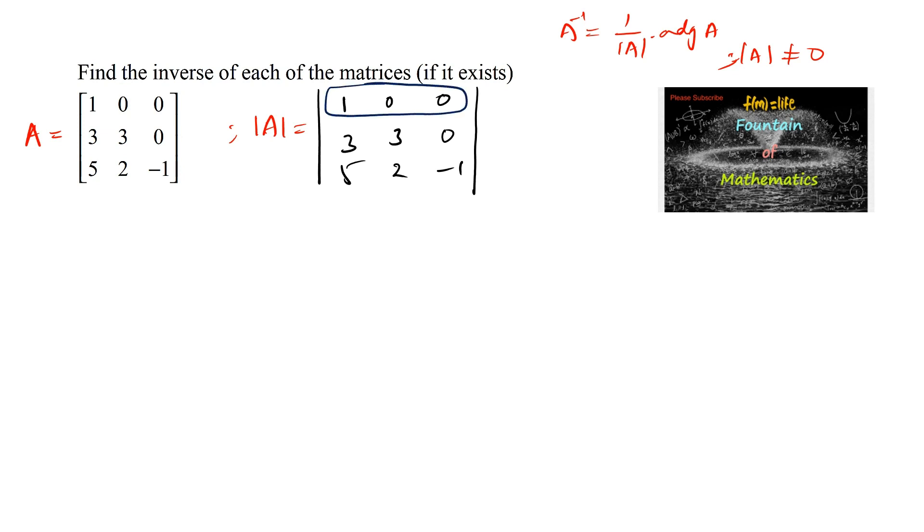Let's find the determinant using the first row, which equals 1 times the determinant of 3, 0; 2, minus 1. So, 3 into negative 1 is minus 3, minus 2 into 0 is 0, which gives us negative 3. The determinant is negative 3, which is not equal to zero. Hence, A inverse exists.